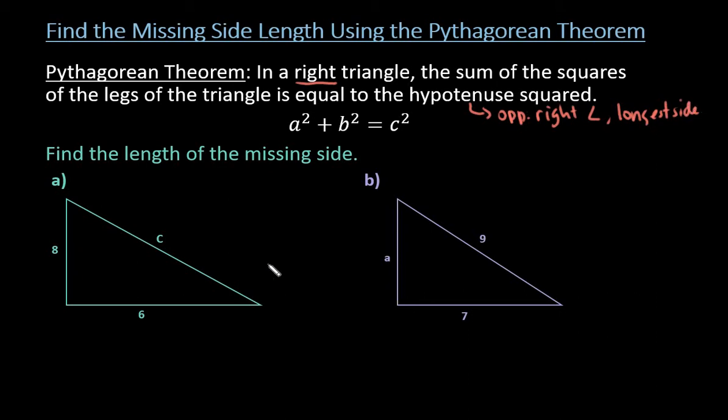The hypotenuse has to be longer than the other sides. So if you don't have a picture drawn, just remember that the longest side always has to go by itself.